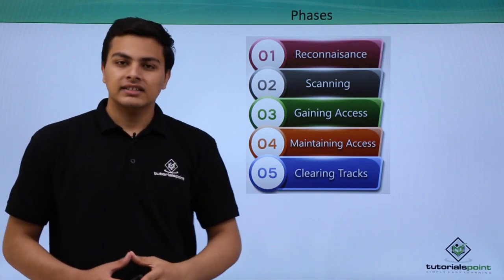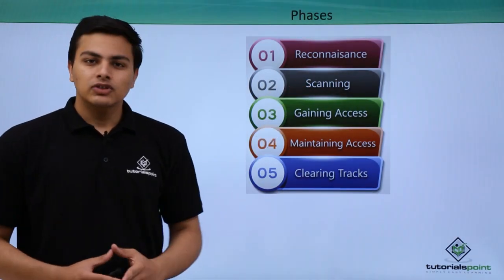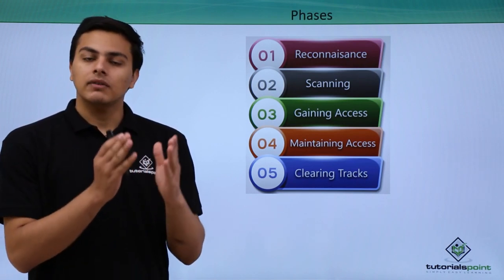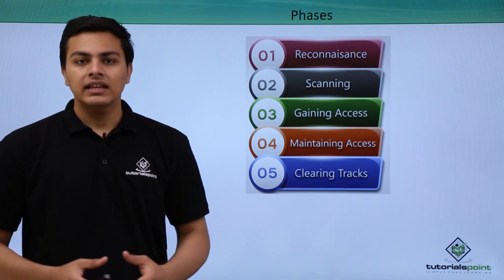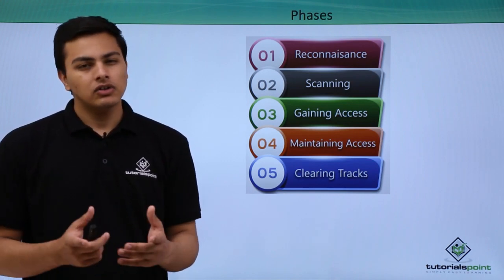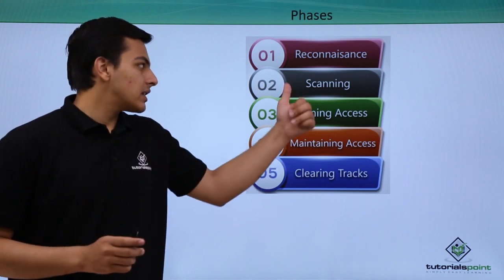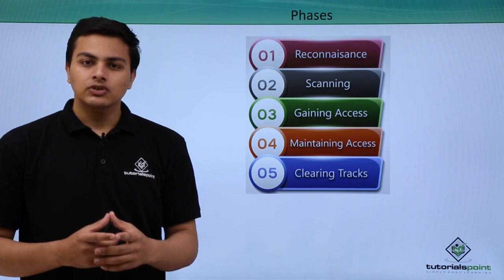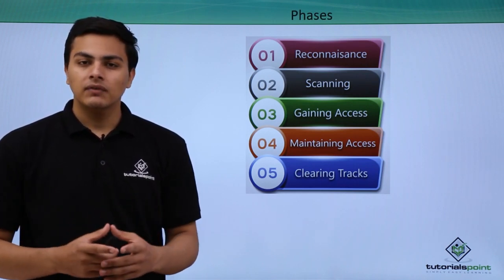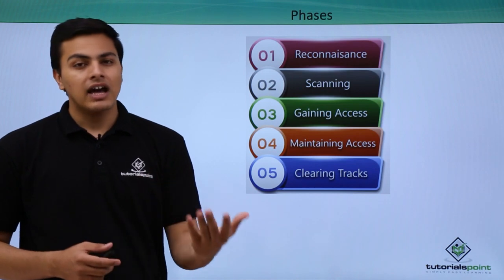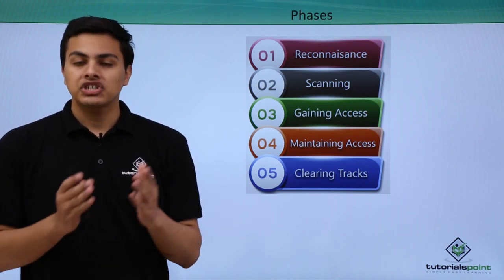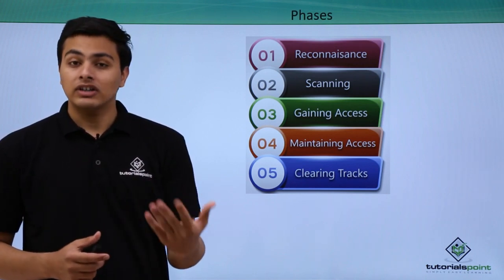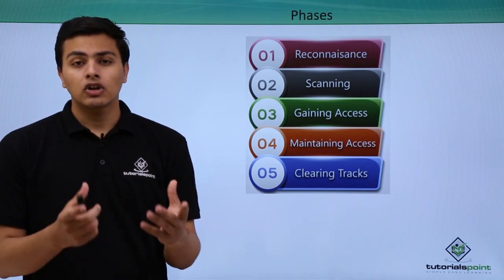The first phase of ethical hacking is reconnaissance. The term reconnaissance also stands for information gathering, which means gathering information about our target. Our target could be anything like a website, person, or web server. If our target is a website, we can find information like the IP address, whether it is hosted on a shared or dedicated server, whether it uses a content management system, or what kind of frameworks are used to build it.